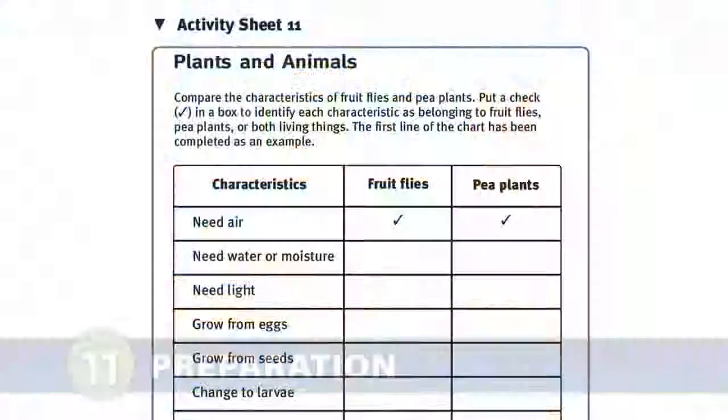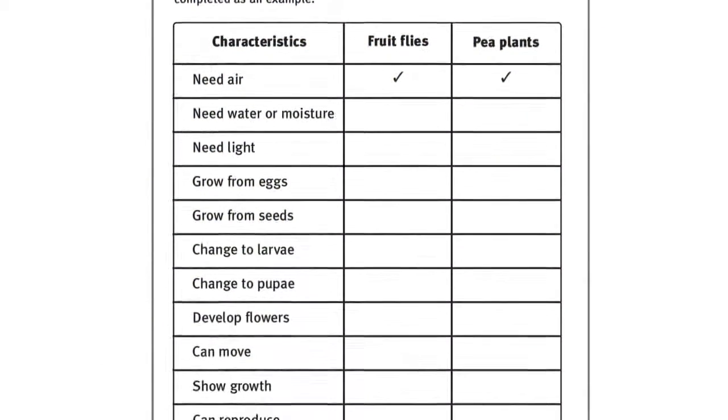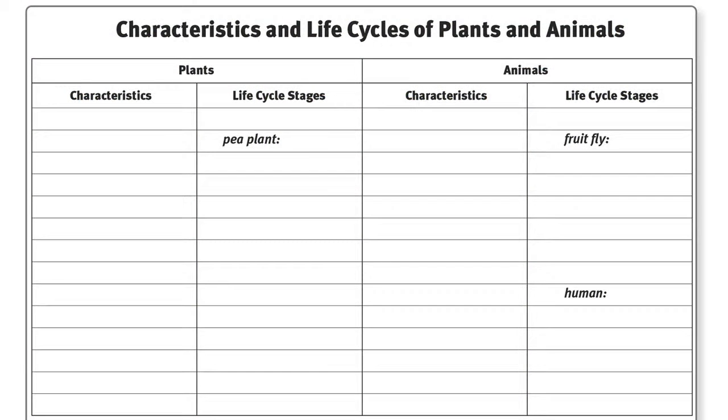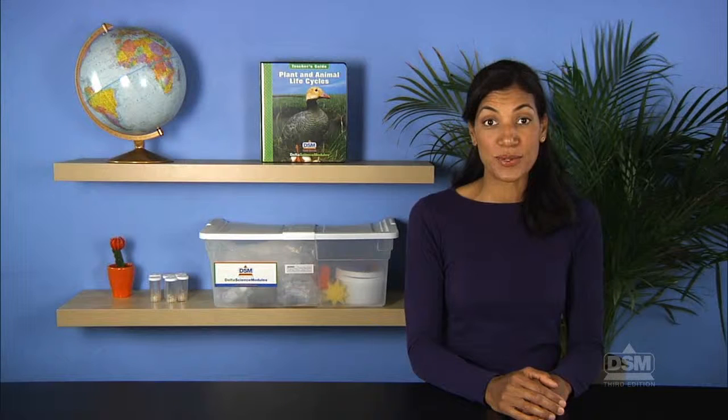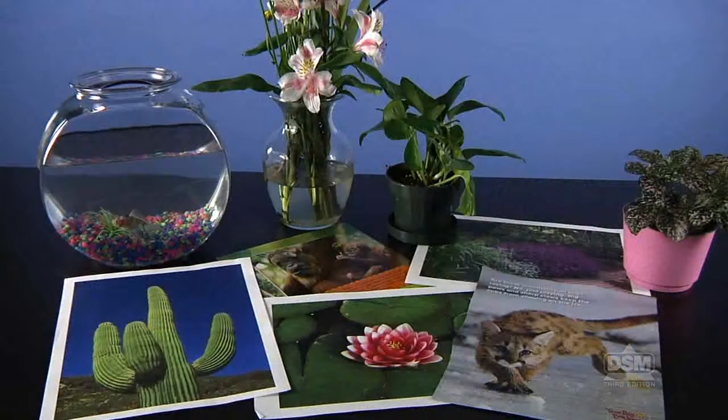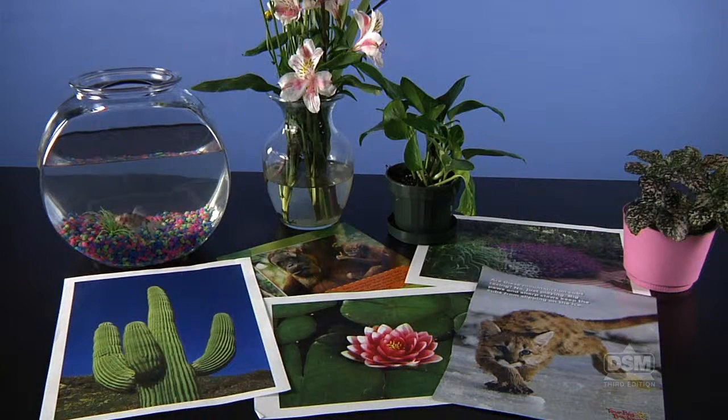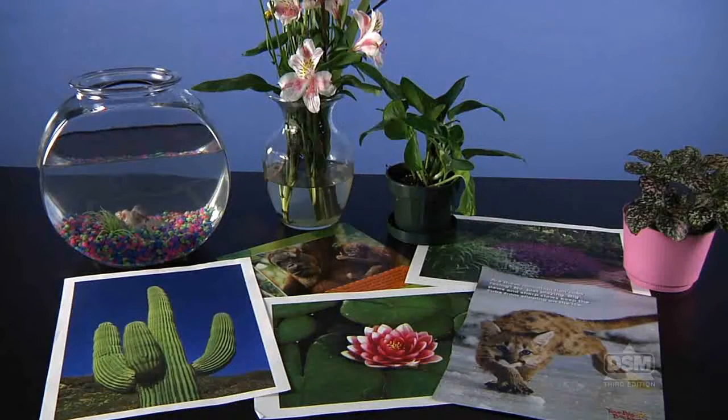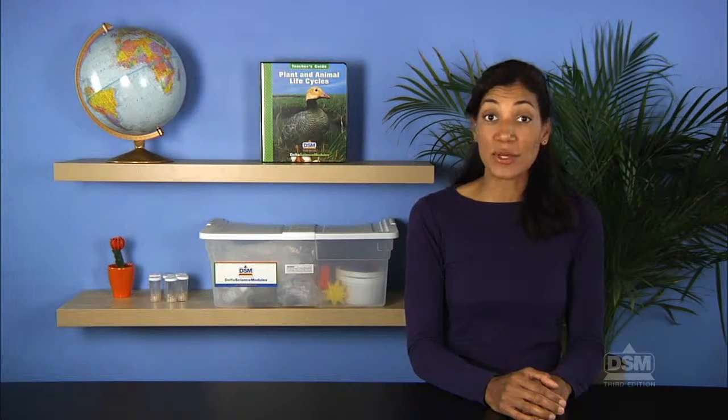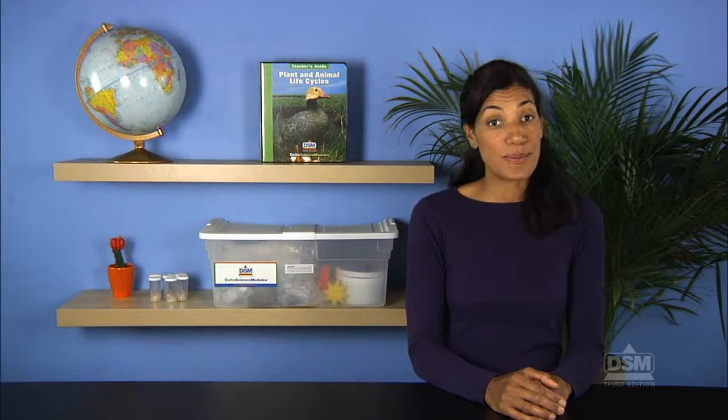To prepare for the activity, make a copy of Activity Sheet 11 for each student. Tape the chart, Characteristics and Life Cycles of Plants and Animals, to the front wall of the classroom. Make sure to gather several live plants and live animals and arrange them in random fashion on a large display table. Note that if live plants and animals are not available, pictures may be substituted.